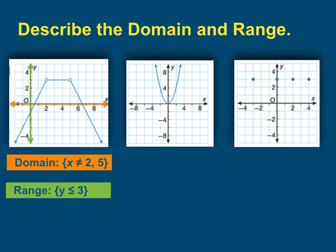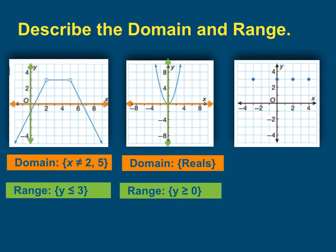In the continuous curve, let's look at our domain, all the allowable x values. All real numbers are allowed. In your range, this curve will never go below y equals 0. So your range is y is greater than or equal to 0.